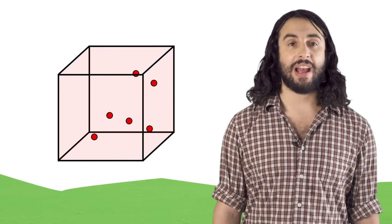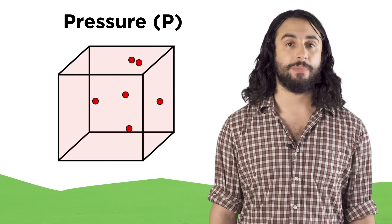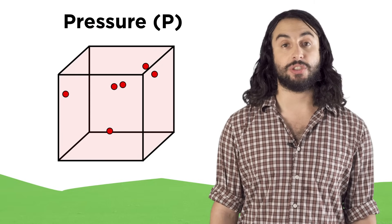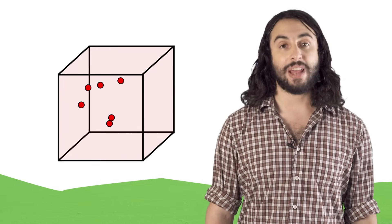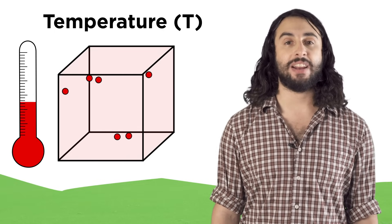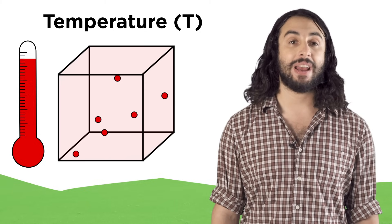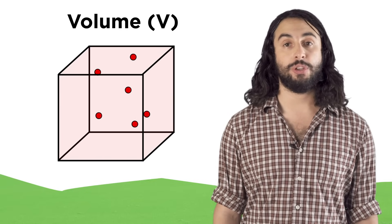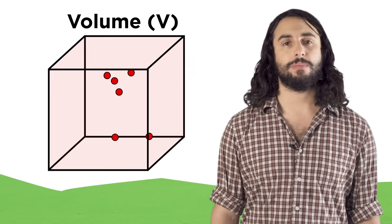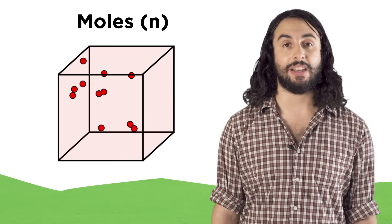When examining an ideal gas we want to be able to discuss four variables. One, pressure. This is the force the gas is exerting on its container, or rather how much the particles are hitting the sides. Two, temperature. This is the amount of heat energy available to be transferred into kinetic energy of motion. The higher the temperature, the faster the particles move. Three, volume. How big is the container? And four, moles. How many particles are there in the container?